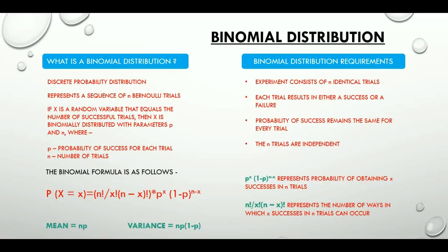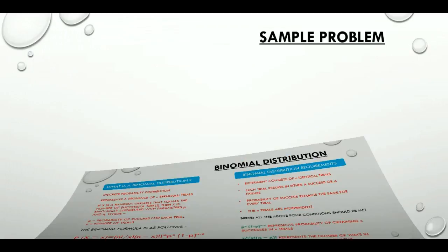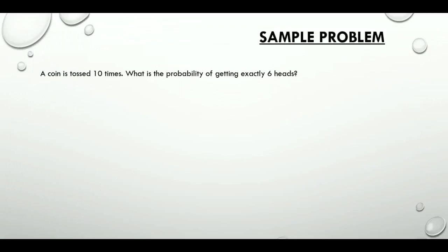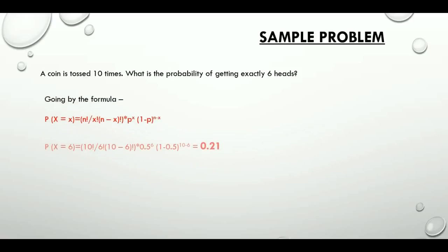Now let's look at a sample problem to see its application. A coin is tossed 10 times — what is the probability of getting exactly 6 heads? Going by the formula, we get 0.21. So the probability of getting exactly 6 heads is 0.21.